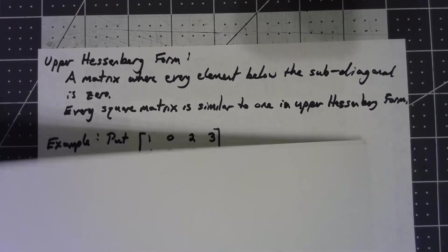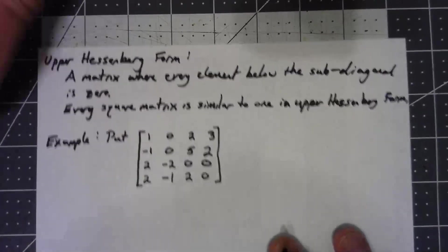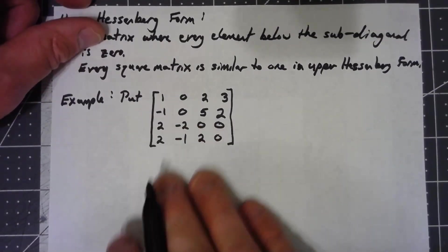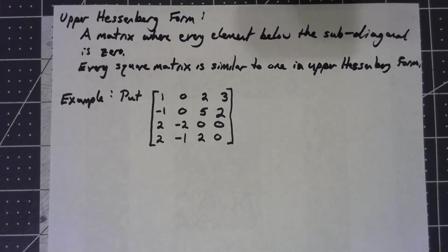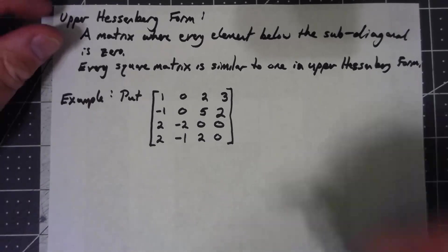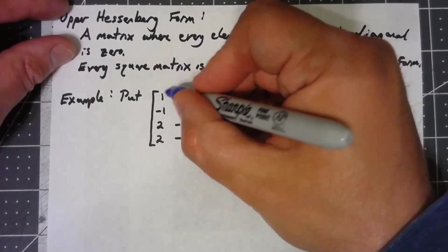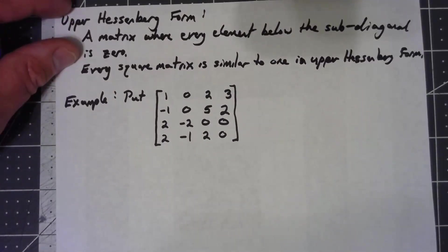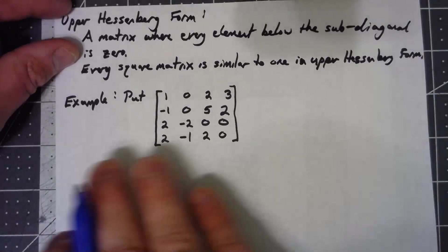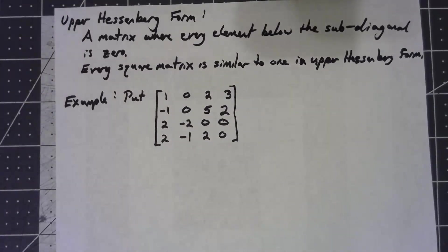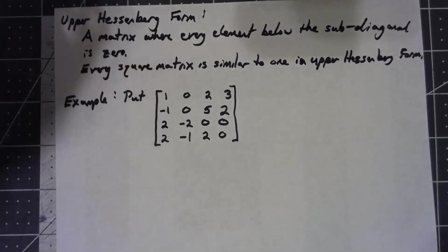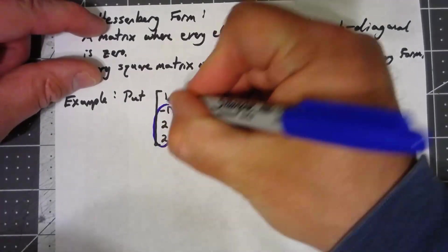Rather than trying to go through and explain the algorithm in general, I think I'm going to do an example. So I want to put this thing into upper Hessenberg form, and we're going to do it using Householder Reflectors. When we used Householder Reflectors before, we took the entire first column and flipped it to something which only had an entry in the top left. The problem with trying to do that here is it wouldn't be similar anymore.